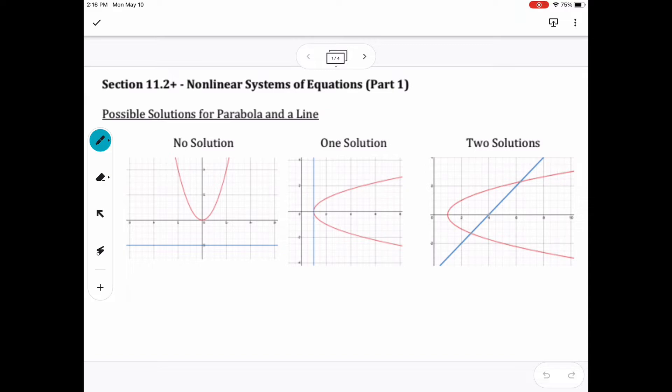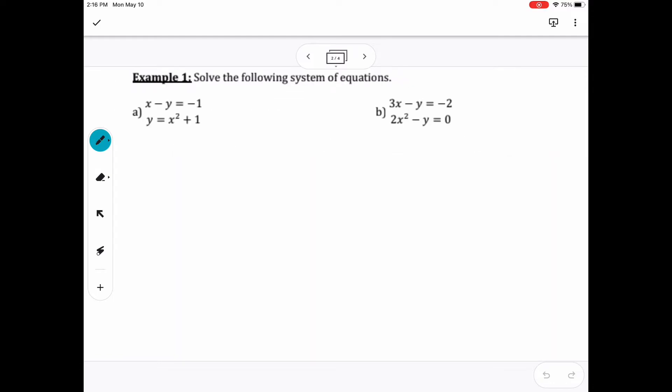Sometimes you would have no solution, one solution if they're meeting at the vertex or like at a tangent line, and then two solutions if the line actually crosses the parabola at two different spots because of the U shape.